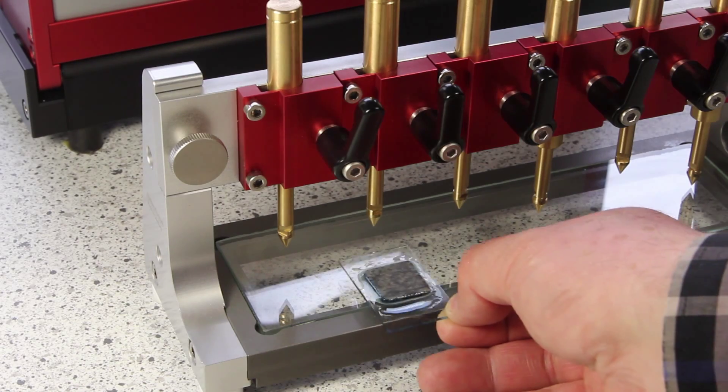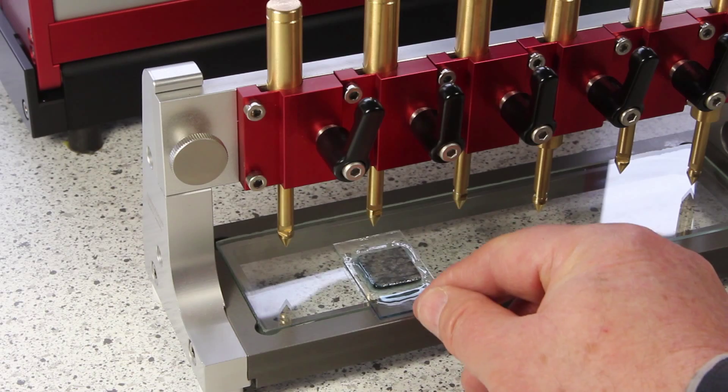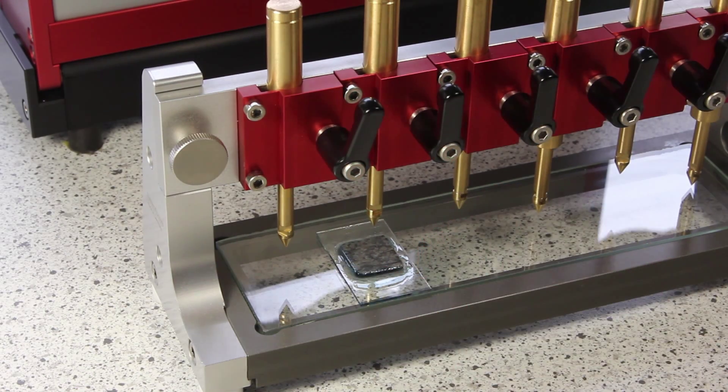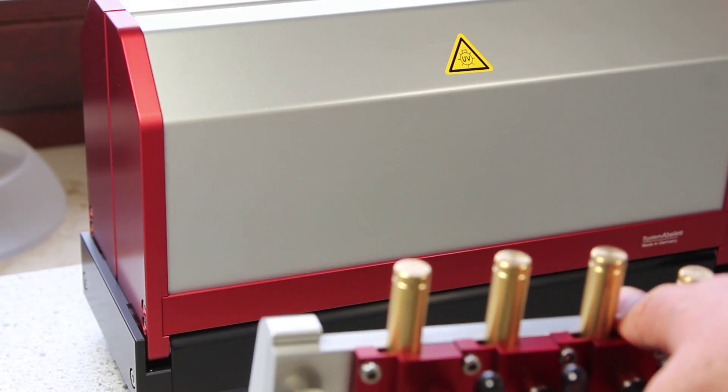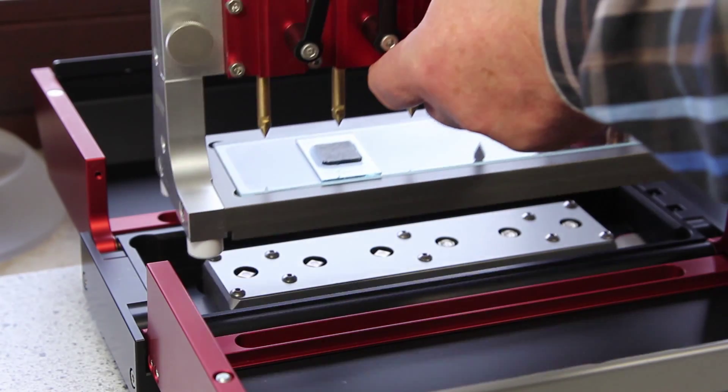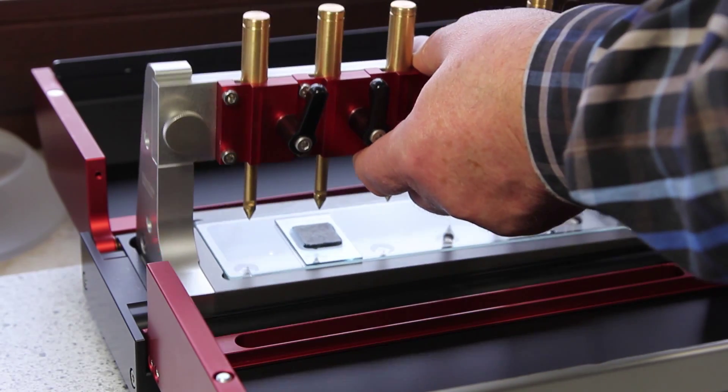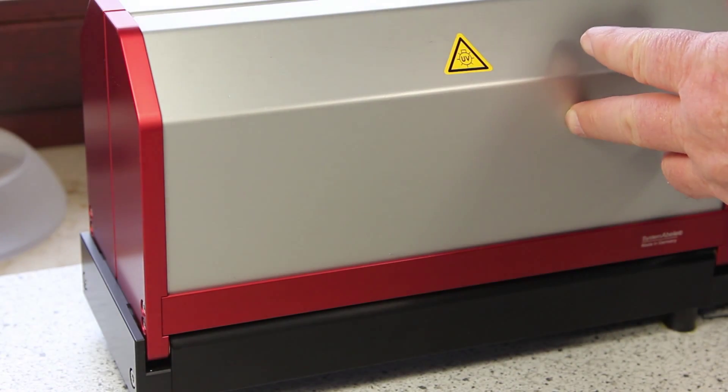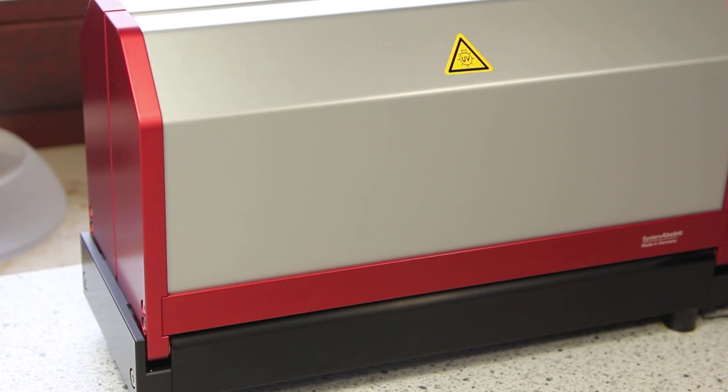Now I put the sample into the jig again. I open the UV case, I put the jig in, I close this, I turn it on and I start it.